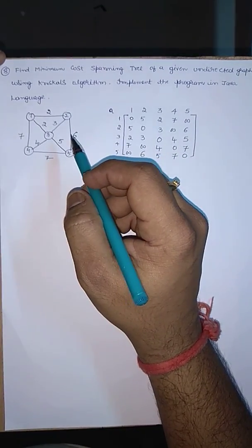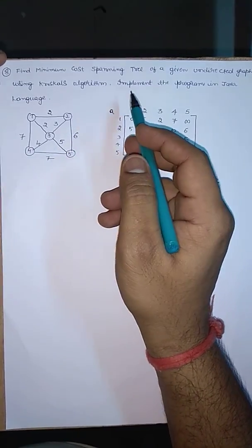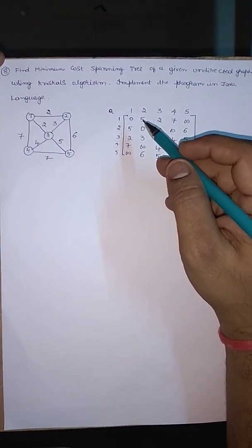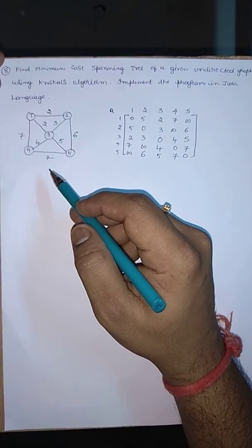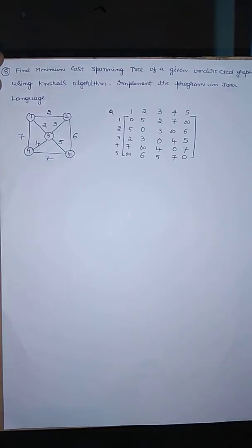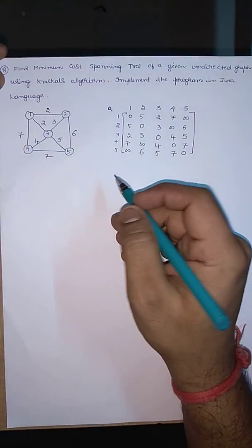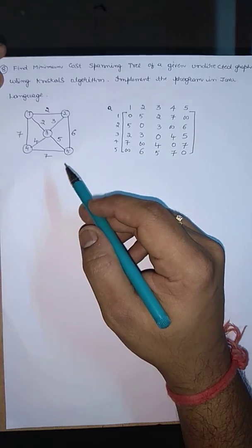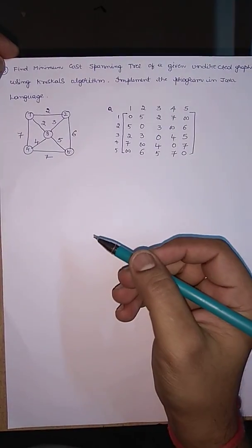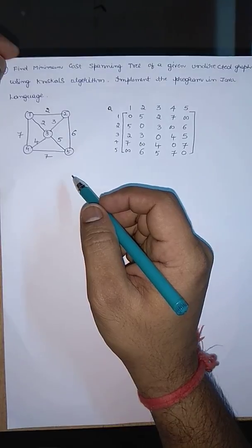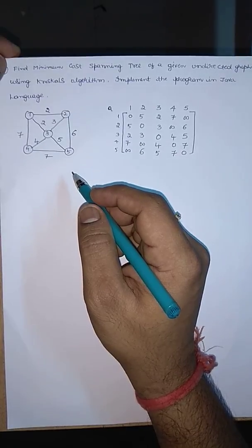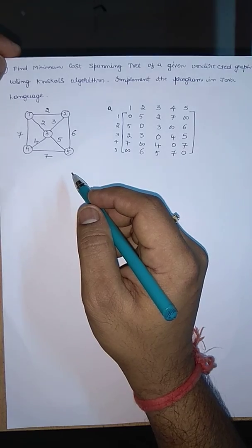Today we will be discussing lab program 8: find minimum cost spanning tree of a given undirected graph using Kruskal's algorithm, implemented in Java language. Let us consider an undirected weighted graph and its corresponding cost matrix. A spanning tree consists of all the vertices and n-1 edges of the given original graph. Out of the many spanning trees, we need to take the one with minimum cost — Kruskal's algorithm finds the same.